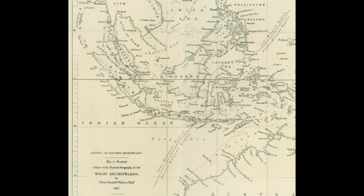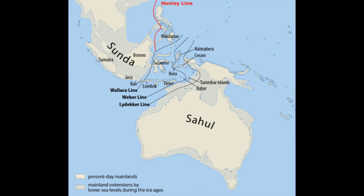The distributions of many bird species observe the line, since many birds do not cross even the smallest stretches of open ocean water. Some bats have distributions that cross the line, but other mammals are generally limited to one side or the other — an exception is the crab-eating macaque. Other groups of plants and animals show differing patterns, but the overall pattern is striking and reasonably consistent.